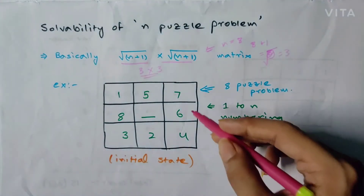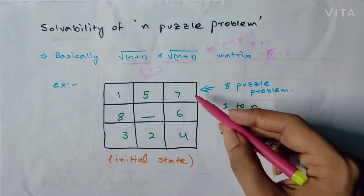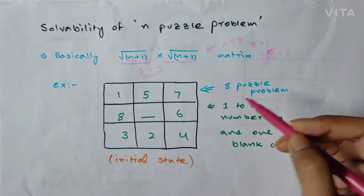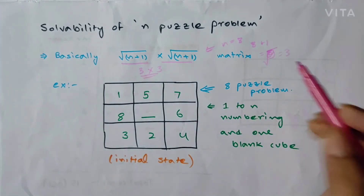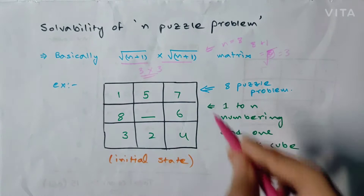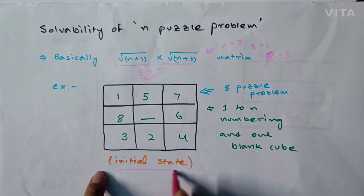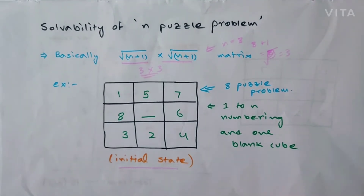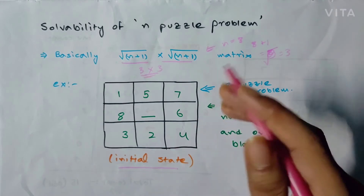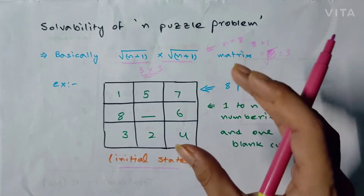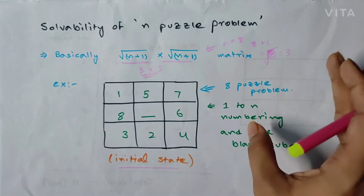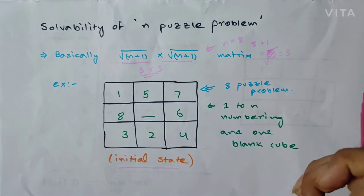Just for an example, here we can see we are given with a 3×3 matrix. This will be called as the initial state. And from this initial state, we will have to reach a goal state — that is our problem statement.